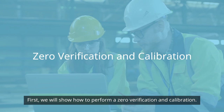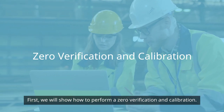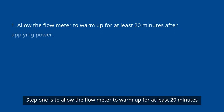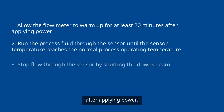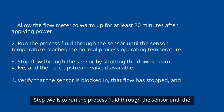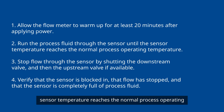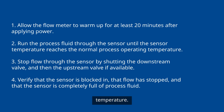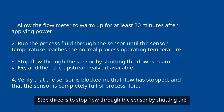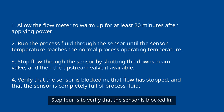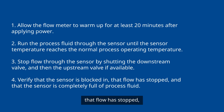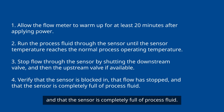First, we will show how to perform a zero verification and calibration. Step one is to allow the flow meter to warm up for at least 20 minutes after applying power. Step two is to run the process fluid through the sensor until the sensor temperature reaches the normal process operating temperature. Step three is to stop flow through the sensor by shutting the downstream valve and then the upstream valve, if available. Step four is to verify that the sensor is blocked in, that flow has stopped, and that the sensor is completely full of process fluid.